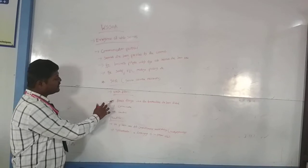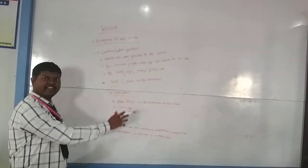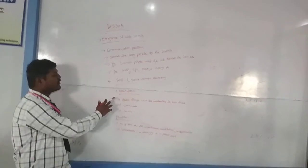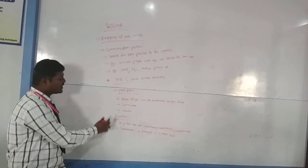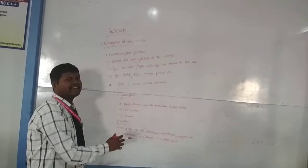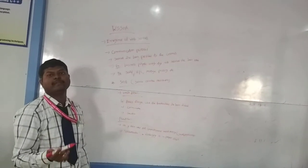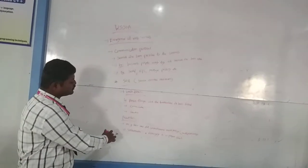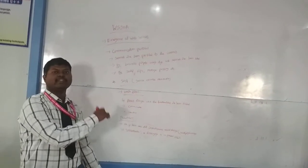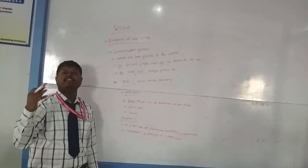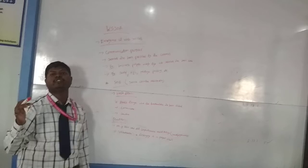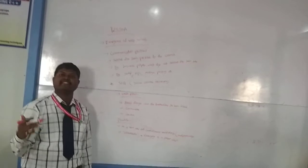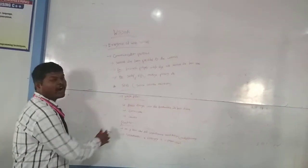Once again, the workflow: the process through which the functionalities are divided, then we communicate these divided functionalities, and then we combine to get the result. Features: SOA is used for computing and multitasking. For orchestration, while combining the smaller modules, we should combine them in a particular order so that the result will be efficient, and for that we use orchestration.